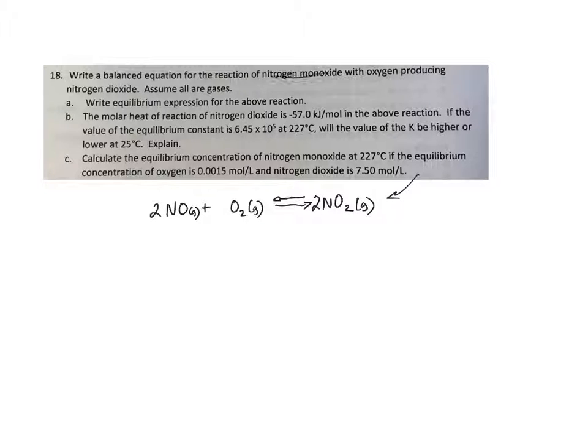So nitrogen monoxide reacts with oxygen to produce nitrogen dioxide. And I think I've balanced it correctly. A, done.